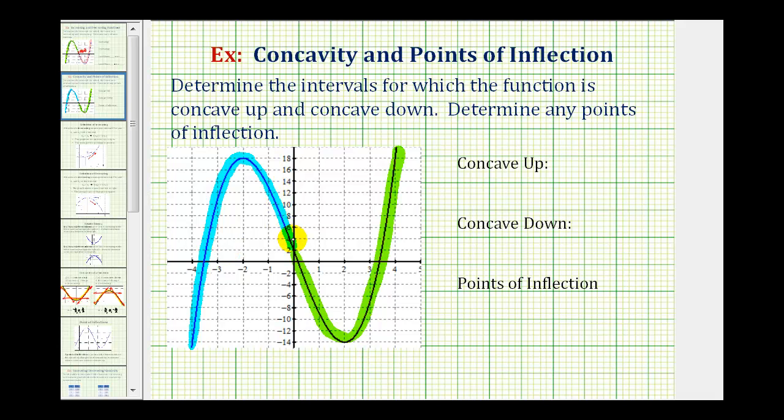And as I mentioned, it looks like it changes concavity right at the y-axis, and this point here would have coordinates zero comma two. So the left piece is concave down, and the right piece is concave up. So the function is concave down from negative infinity to zero.